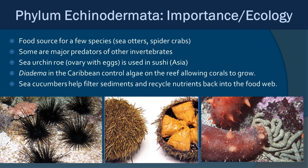The importance of echinoderms: they are a food source for some species like sea otters and spider crabs, and some cultures eat sea urchin roe used in sushi. Sea stars are major predators of other invertebrates. The long-spine diadema urchins are a keystone species in the Caribbean — they feed on algae, allowing coral polyps to grow and new larvae to settle on bare rock. Sea cucumbers are literally the ocean's cleanup crew, constantly processing deposits and cycling detritus back into the food web.